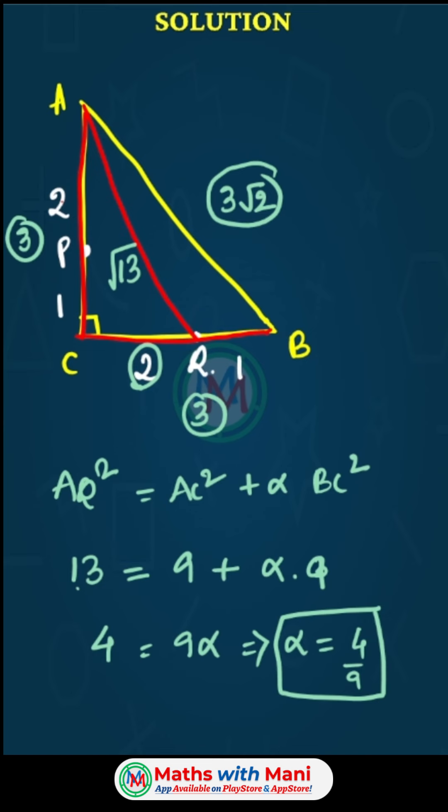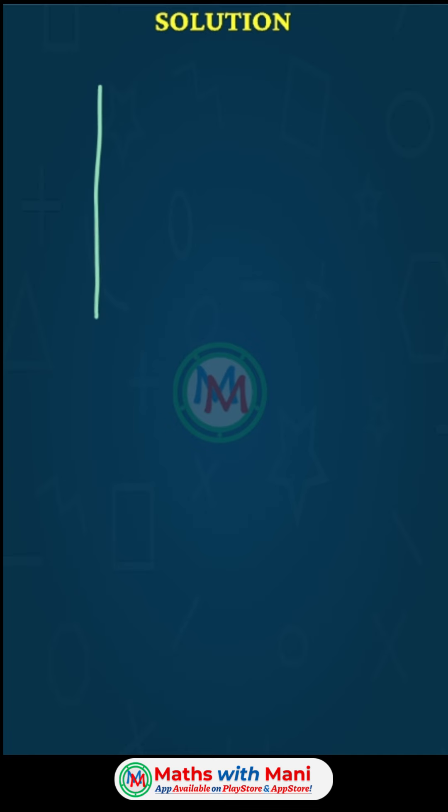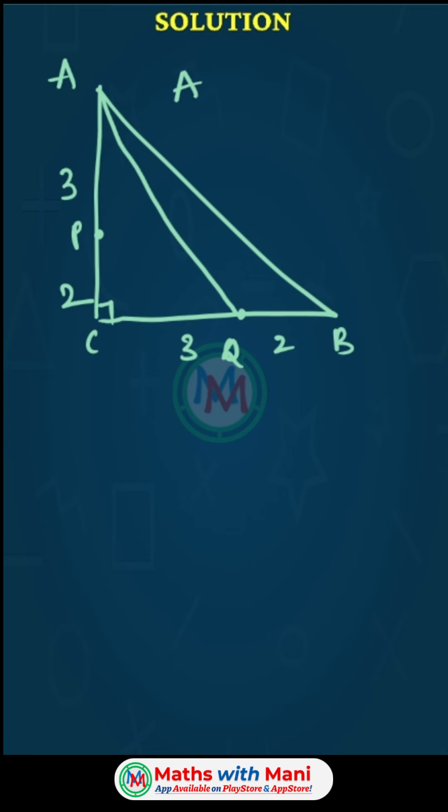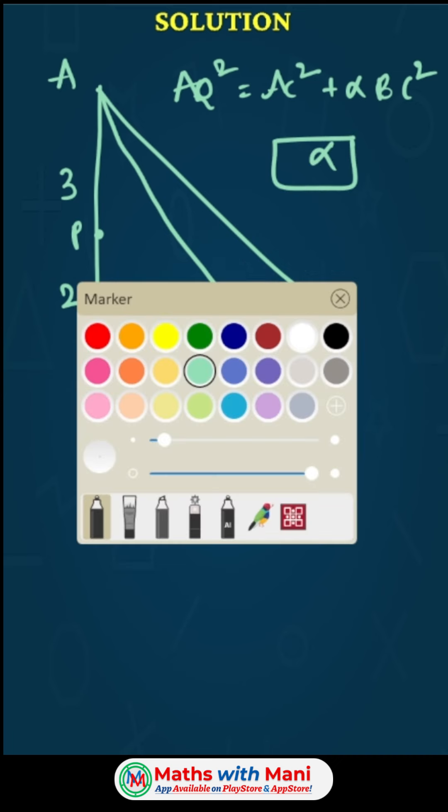Suppose in the exam it's not 2:1 but 3:2. Same question: it's a right angle triangle ABC, this is A, this is B, the ratio is 3:2, with points Q and P. Given AQ² = AC² + α BC², find α.